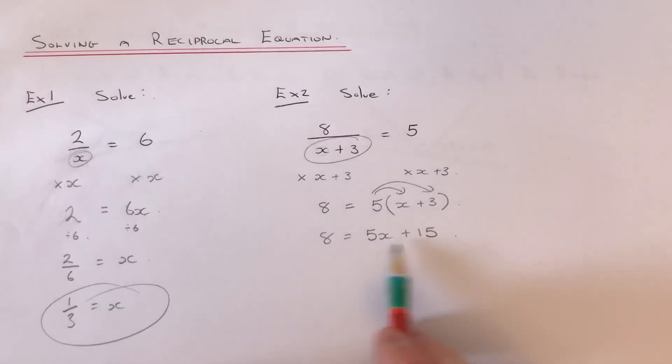And then we just need to now do the inverse operations to find x. So if we get rid of the plus 15 first by taking away 15, that will give us minus 7 equals 5x.